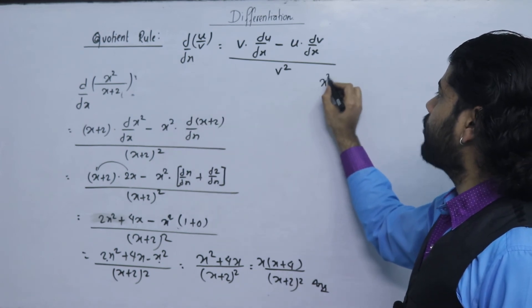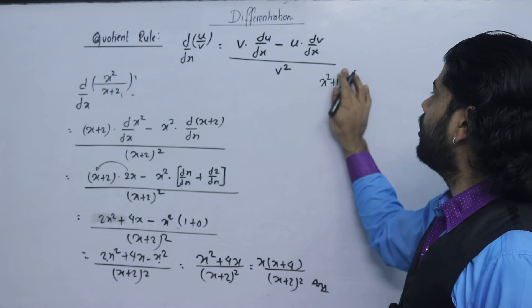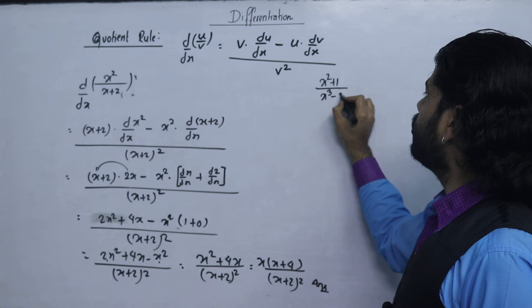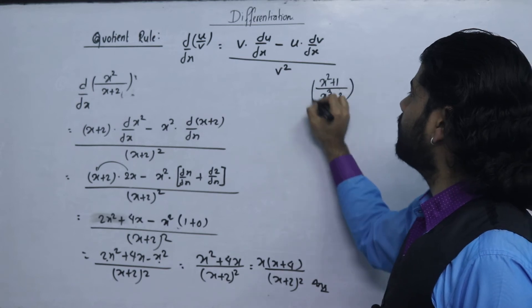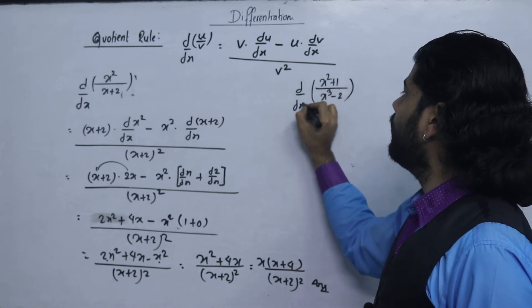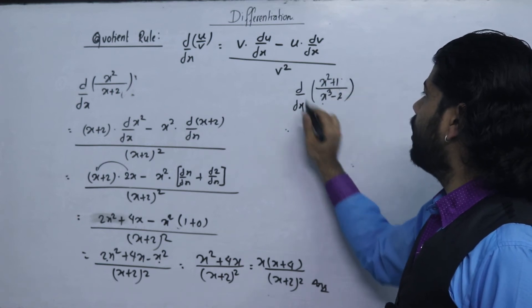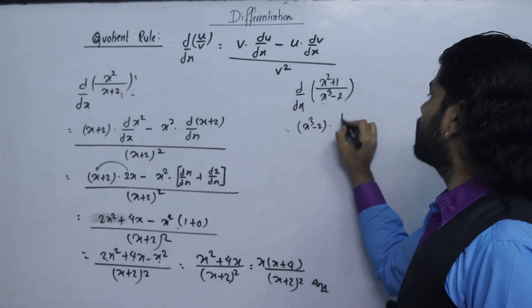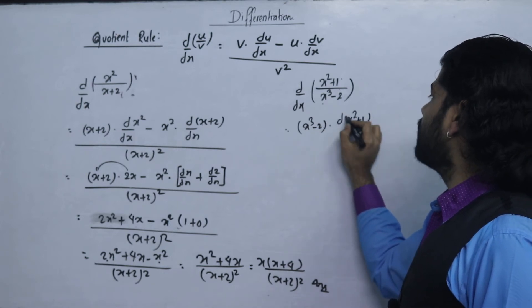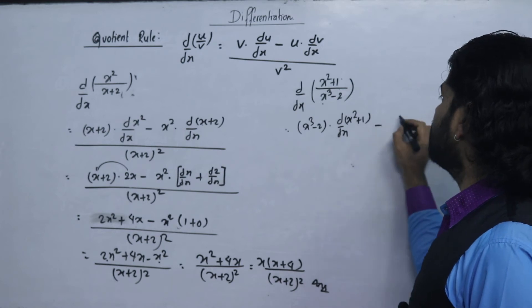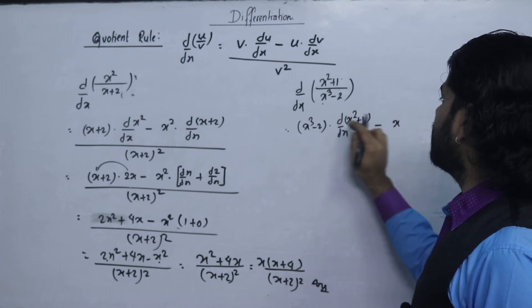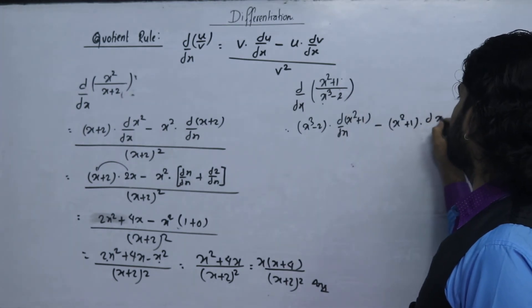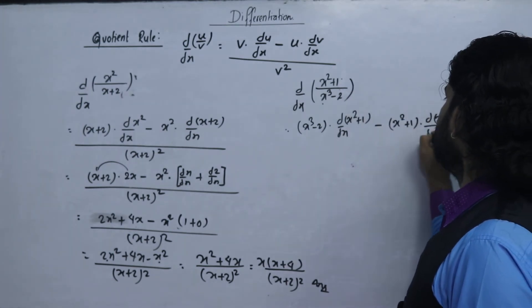We will do x squared plus 1 upon x cubed minus 2. We will use the quotient rule. Identifying u and v: v is x cubed minus 2, and u is x squared plus 1. Applying the quotient rule: v times the derivative of u with respect to dx, minus u times the derivative of v with respect to dx.